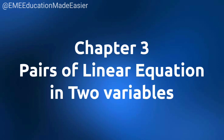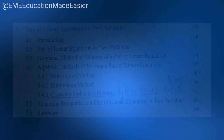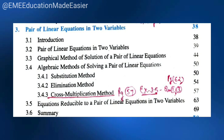In chapter number 3, Pairs of Linear Equations in two variables, all algebraic methods of solving a pair of linear equations by the cross-multiplication method is not coming. That is on page 57, and exercise 3.5, question number 1 and 3 of page number 62 is not coming — all related to the cross-multiplication method.